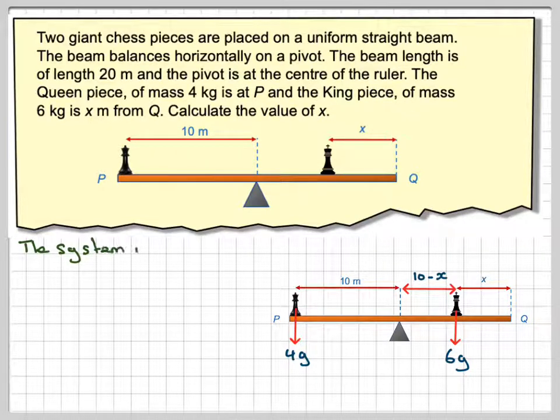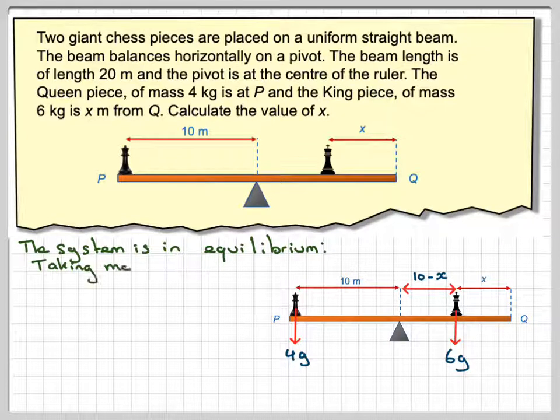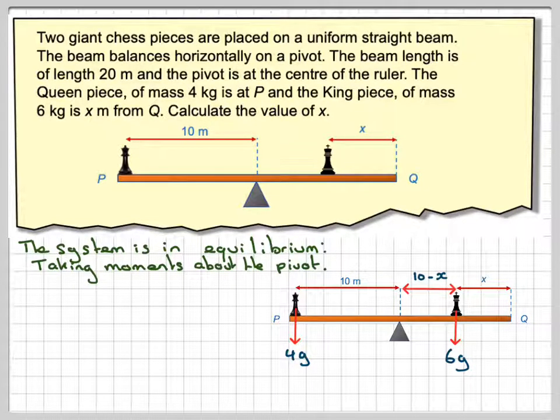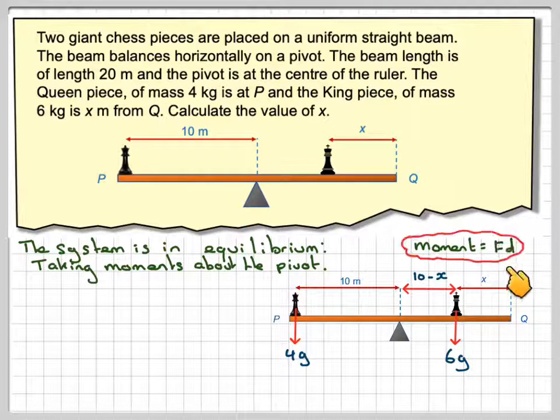And the system is in equilibrium, so taking moments about the pivot, taking moments about this point. The moment is the force times the distance. So the force here is 4G, and this is an anti-clockwise moment, so it's positive, times the 10 metres from the pivot.